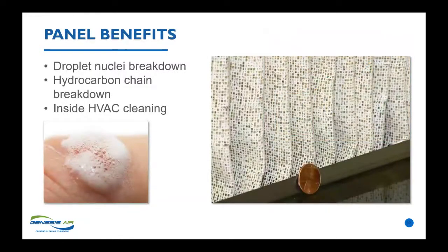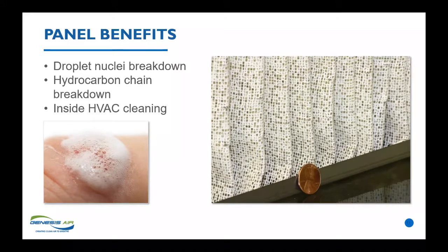If you put peroxide on a cut and it bubbled up, that's a free radical like the one we create — it destroys the contaminant, it doesn't capture it. You need to be careful where you're creating a free radical: are you creating it in a space where it can affect your lungs, or are you containing the reaction within a controlled area such as a panel? We also can break down hydrocarbon chains with the same hydroxyl radical. And if the UVC light shines on your evaporator coil, it acts as a germicidal lamp to keep surfaces clean.